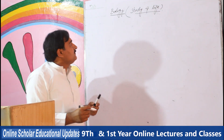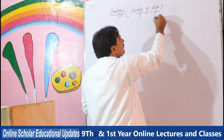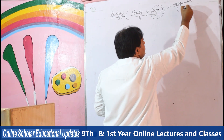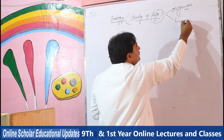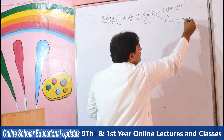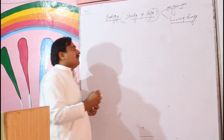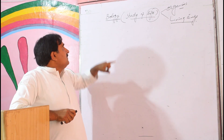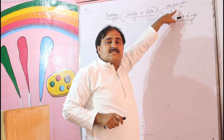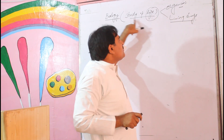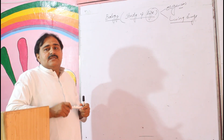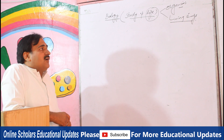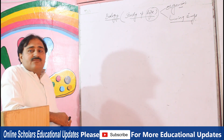Life means organisms, living things. Biology can also be defined in another aspect: biology is the study of organisms, biology is also the study of living things. Biology is a branch of science that deals with the study of life, or study of organisms, or study of living things.